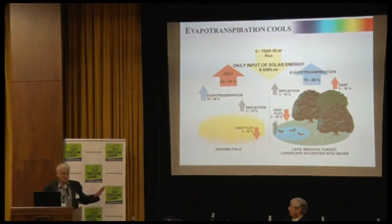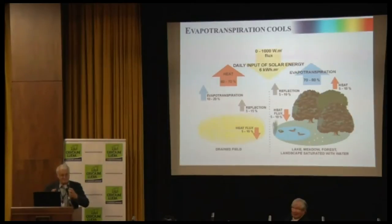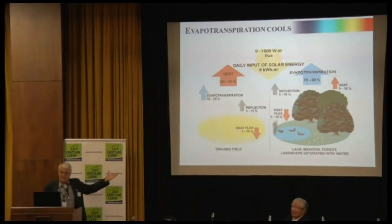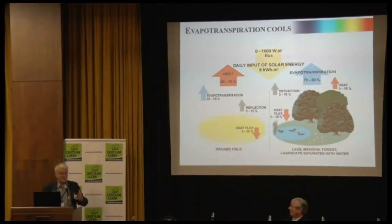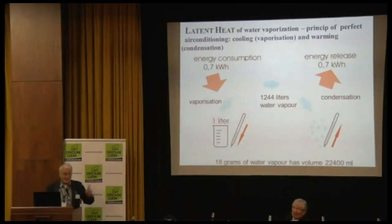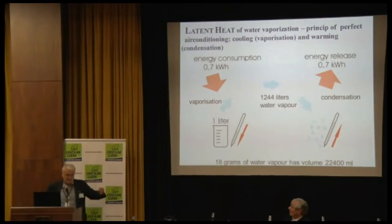On dry land, the main energy that leaves is hot air. But in a well-designed cultural landscape or forest, most of the energy is used for life processes. The most important is the cooling effect of vegetation — water vapor. This is what Willy Ripple was explaining, and here it is illustrated.